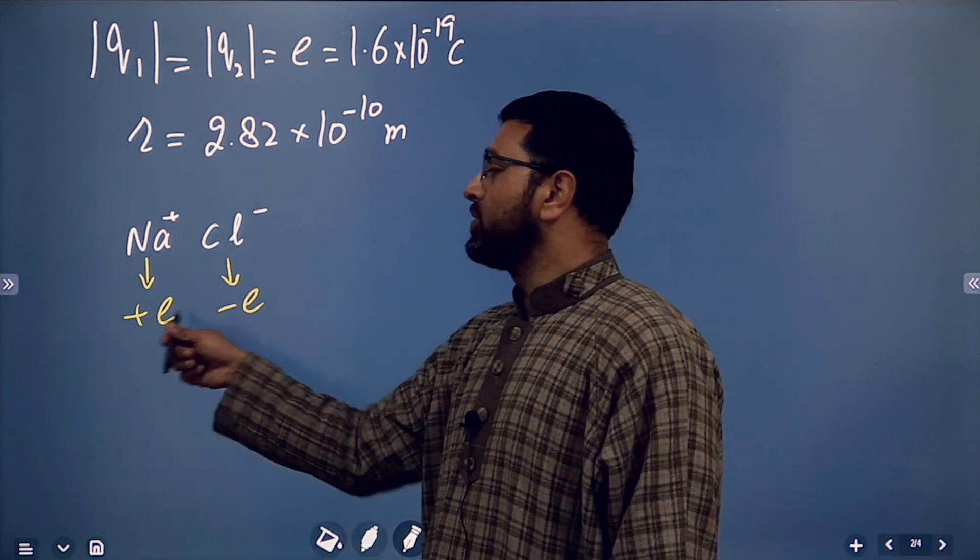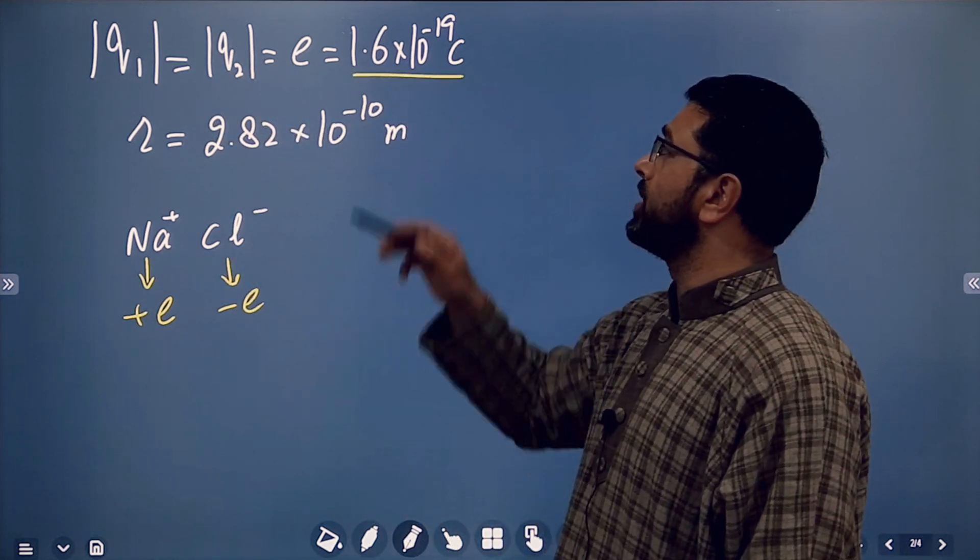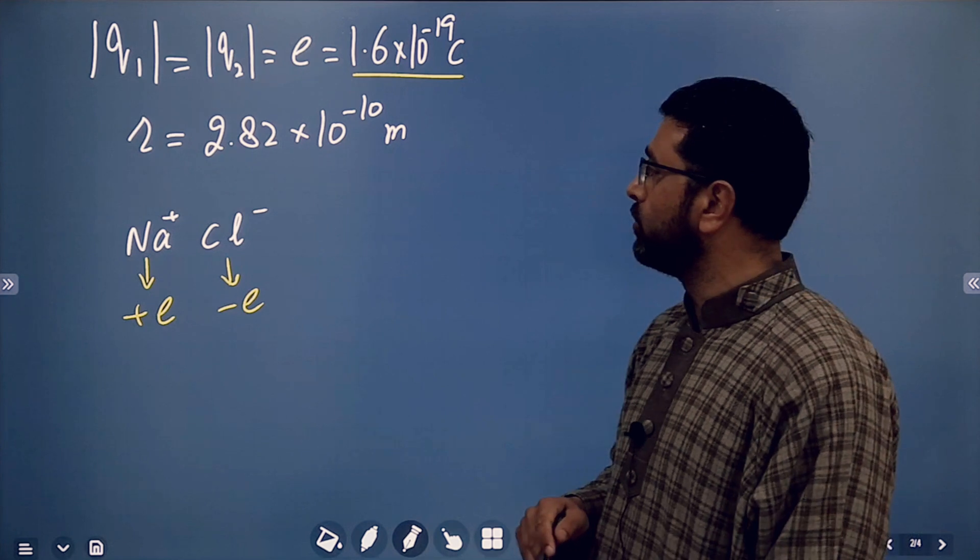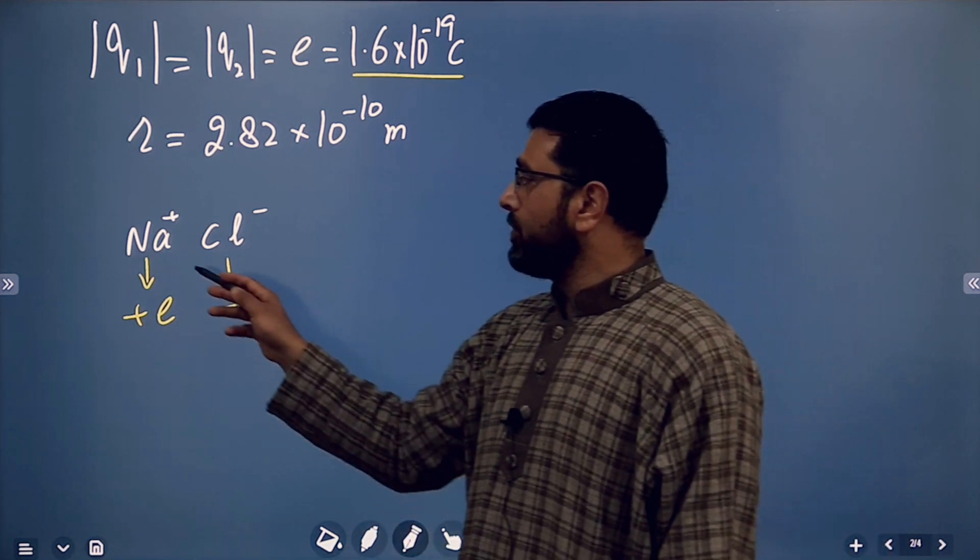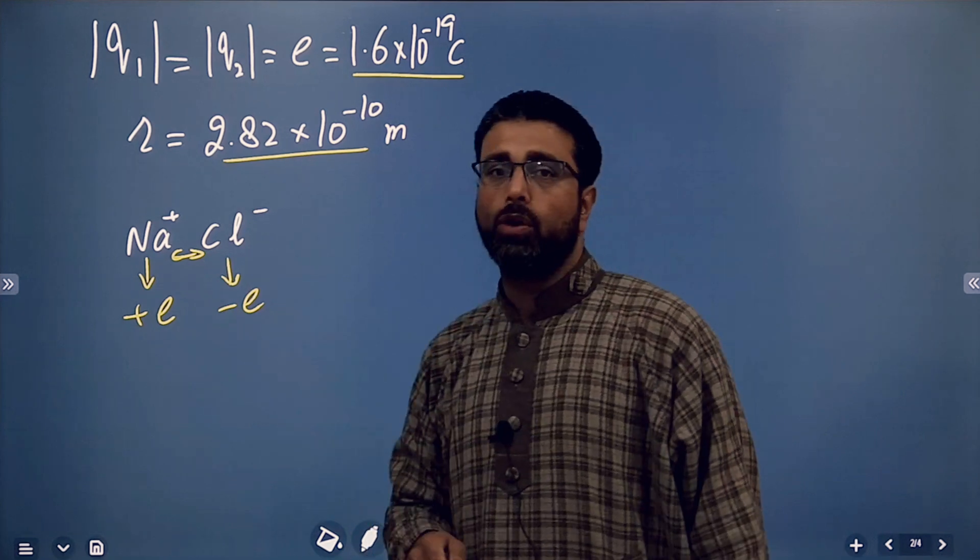So, both of them have same magnitude of charges. Q1 equals Q2 equals 1.6 × 10^-19 Coulomb. And separation between sodium and chlorine is given as 2.82 × 10^-10 meters.